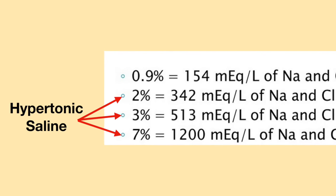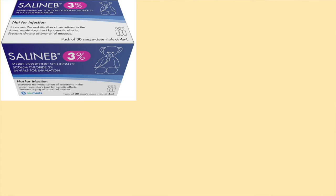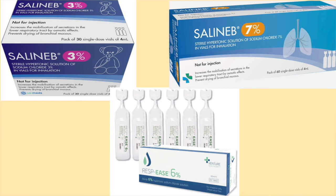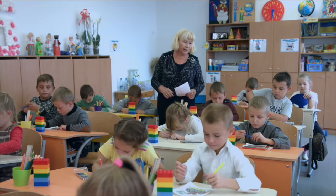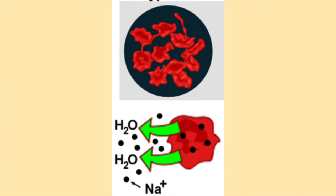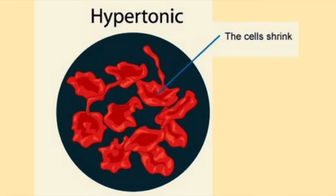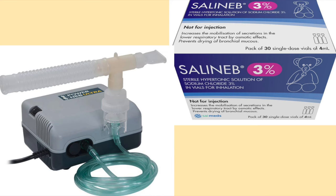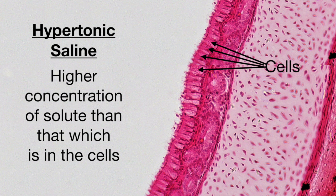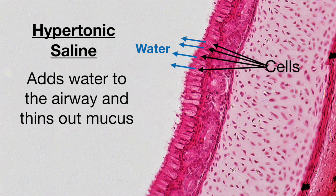Hypertonic saline is any saline which has a sodium chloride concentration above 0.9% — it may be 3%, 6%, 7%, etc. Hypertonic saline has a concentration higher than that of body fluids. When a cell is exposed to a hypertonic solution, the water inside the cell leaves in an attempt to balance out the high solute concentration, so the cell loses water and shrinks, and the hypertonic solution gains water. When hypertonic saline is used in a nebulizer, it has a higher concentration of solute than the cells lining the airway, so the cells release water into the airway, which helps moisten and thin out the mucus.